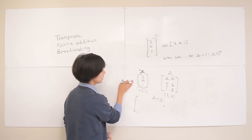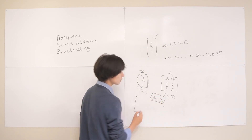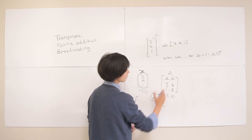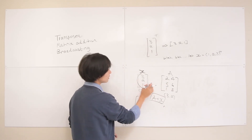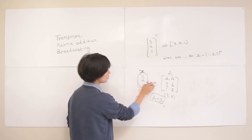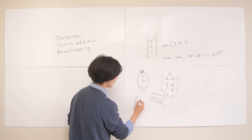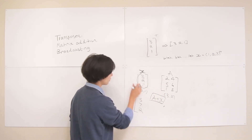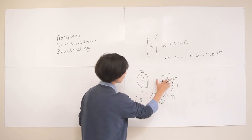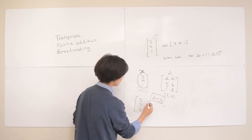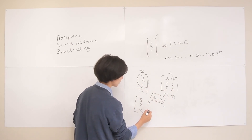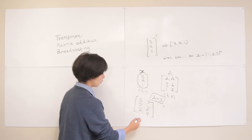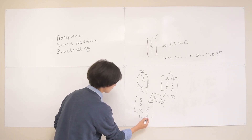Working through A plus x with broadcasting: adding x to the first column gives 3+2=5, 2+5=7, 1+1=2. Adding x to the second column gives 3+4=7, 2+6=8, 1+8=9. So the resulting matrix is [5, 7; 7, 8; 2, 9]. That's what A plus x equals when we broadcast the column vector across the columns of A.